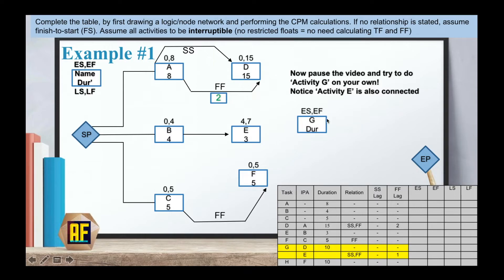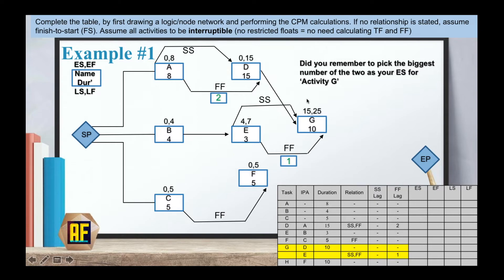Moving on to activity G. I want you to pause the video and try to do activity G on your own. Notice activity E is also connected. In activity G, it's coming from D and E with a duration of 10 days. From activity E, it has a start to start and a finish to finish relationship and one lag, which is pretty similar to what we did in D. So here is our answer. I hope that for your early start, you picked 15. If we have an IPA of two activities, we need to pick the bigger number of the two for our early start. We picked 15. Fifteen plus 10 is 25. Twenty-five is bigger than 7, we met our condition. Fifteen is bigger than 4, so we don't have a problem. And with the lag, 25 is much bigger than 3 plus 1, so we also don't have a problem.